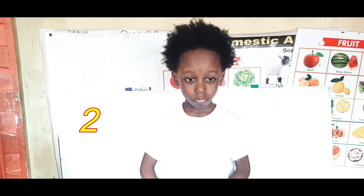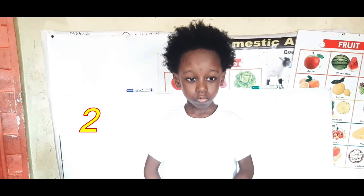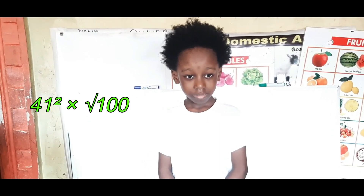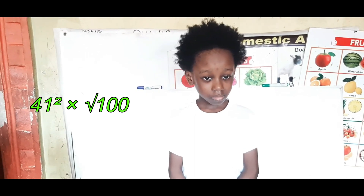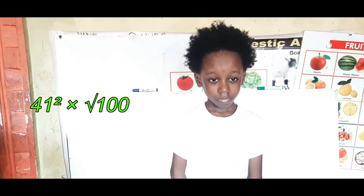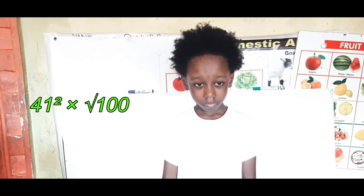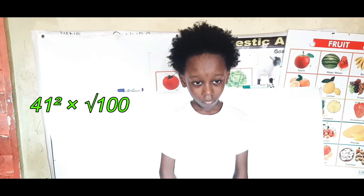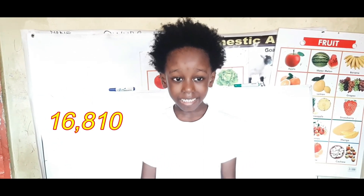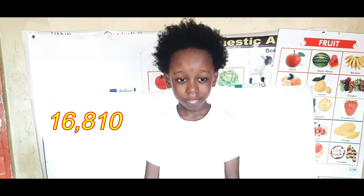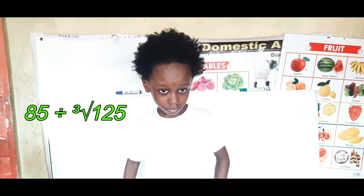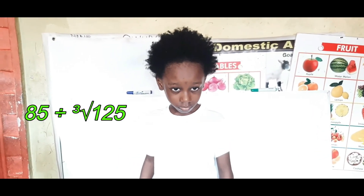2. Very good. 41 square times square root of 100. 60,810. Very good. 85 divided by cube root of 125.